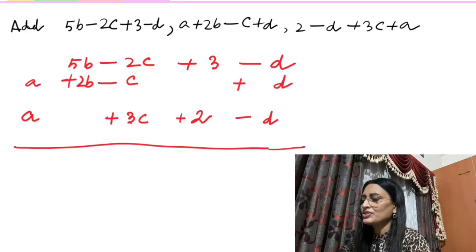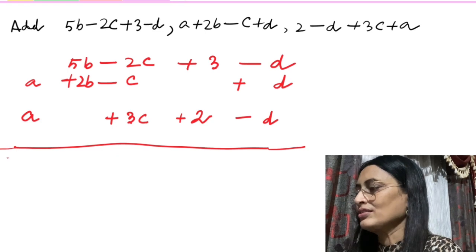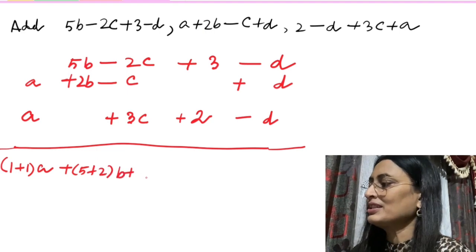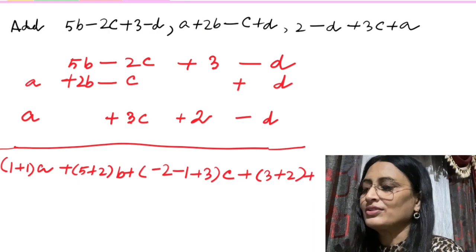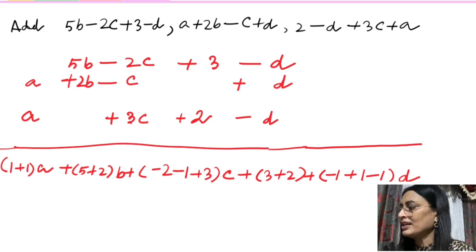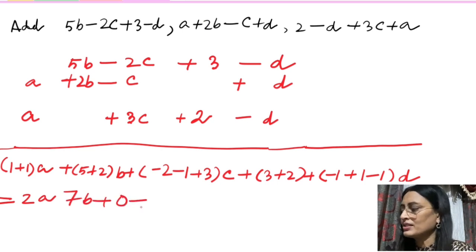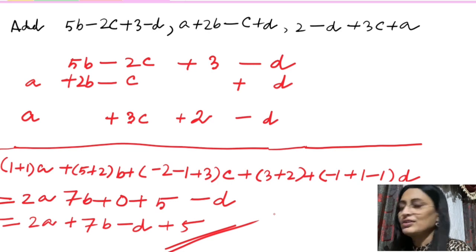Like here, as constant term is missing in the second row, we have kept that place blank. I have written a plus 3c minus d. Now it's very easy to add like terms. We have 5b plus 2b is 7b, minus 2c plus 3c is c, and for constant terms plus 5. The answer is 2a plus 7b plus c minus d plus 5, but we need to rearrange to keep constant terms at the end, which is our third step. So the answer is a plus 7b plus c minus d plus 5.